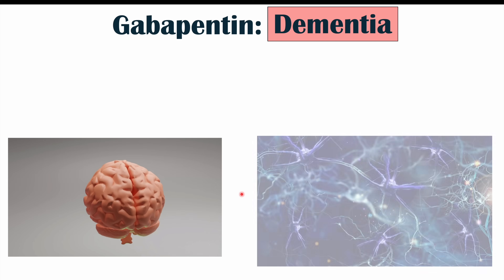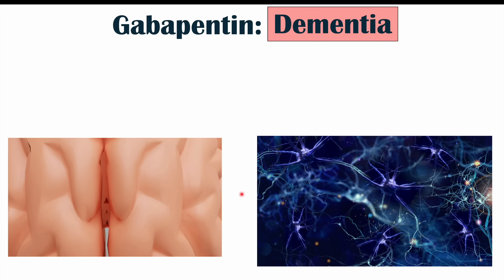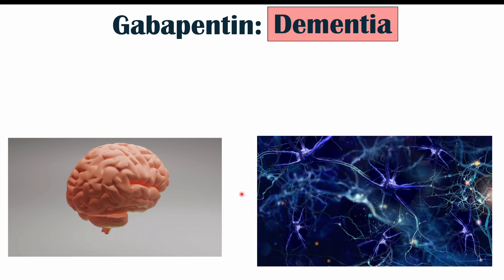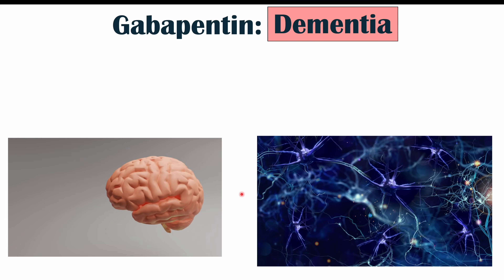The third important health consequence of gabapentin use, especially long-term use, is cognitive decline and increased risk of dementia. This relates to gabapentin's mechanism of action: suppression of neuronal functioning means neurons are not firing and not active. Having active neurons helps maintain neuronal integrity — we get better wiring of neurons and more synaptic connections being built when there is more neuronal functioning.